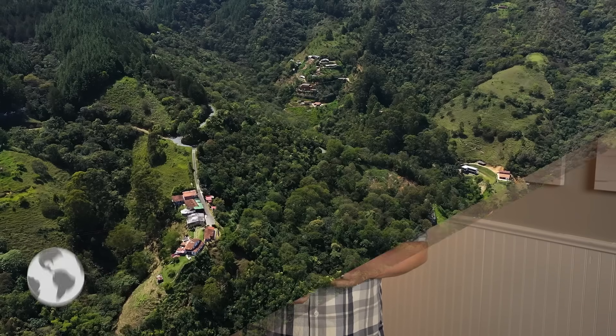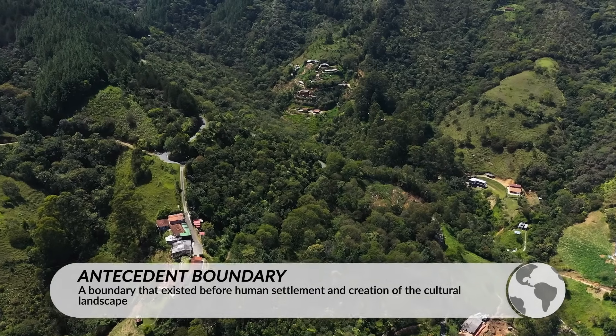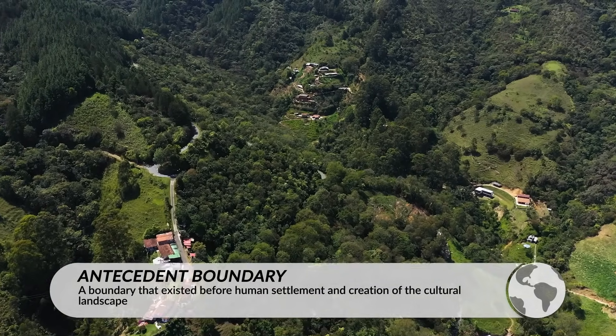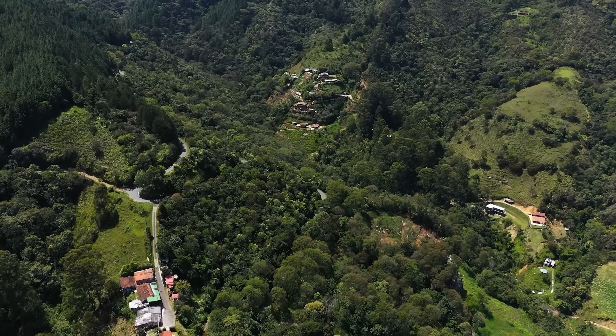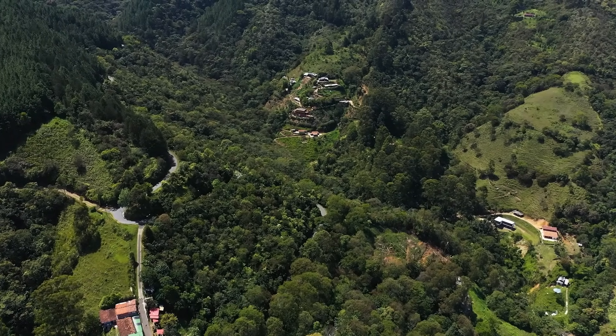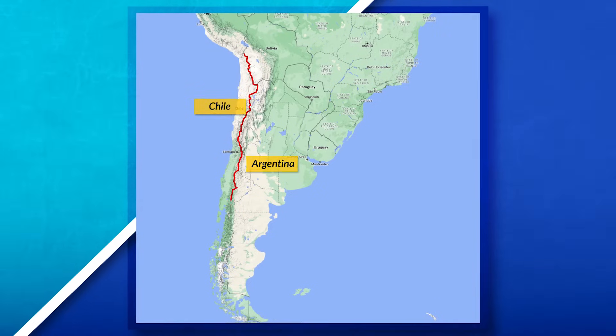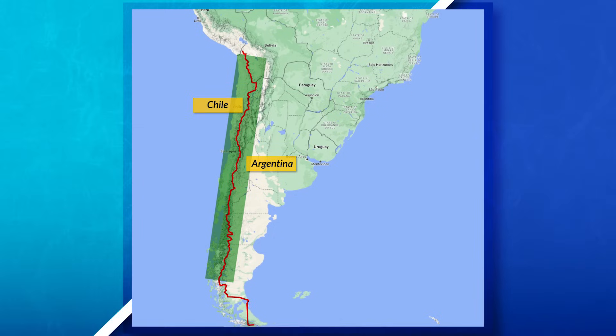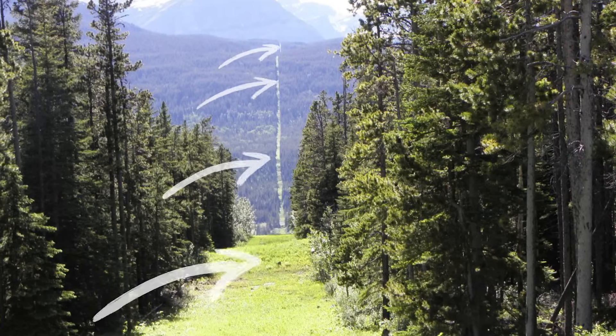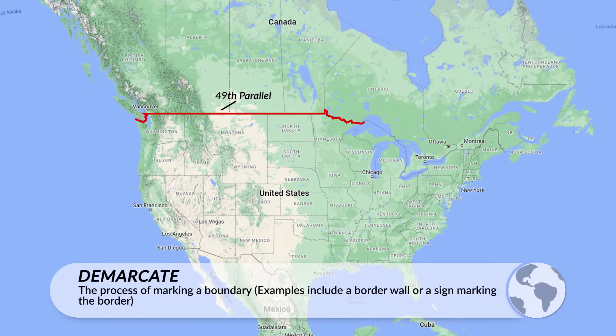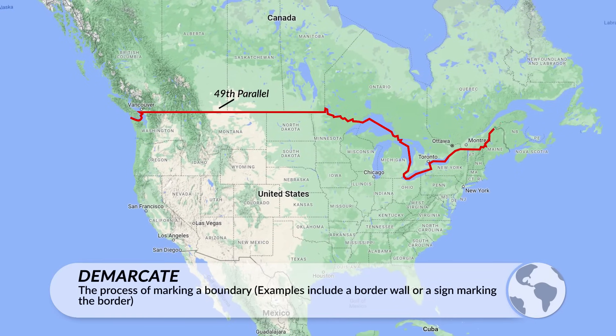We also have antecedent boundaries, which are boundaries that have existed before human settlement or before the creation of the cultural landscape. These boundaries are based off the local landscape and not influenced by the current culture. For example, the boundary between Argentina and Chile is an antecedent boundary because it is based off the Andes mountains — the boundary existed before the creation of the cultural landscape. Another example would be the United States border with Canada, since the line was delimited and demarcated based off the 49th parallel, with most of the land not even being settled yet, so the cultural landscape did not exist before the boundary was created.